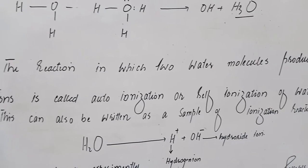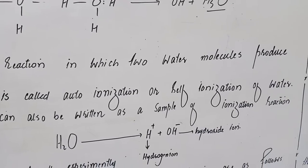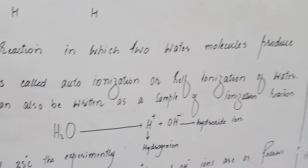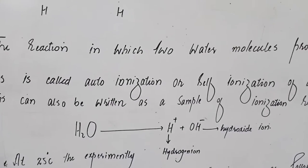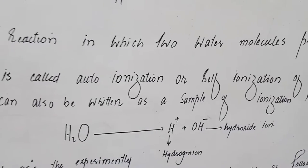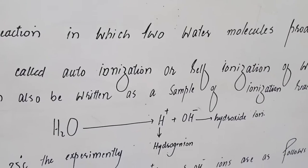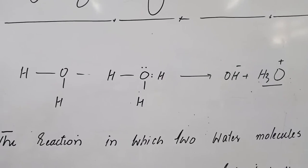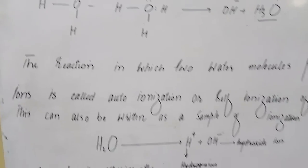This can also be written as a simple ionization reaction: H₂O produces a hydrogen ion (H⁺) and a hydroxyl ion (OH⁻).